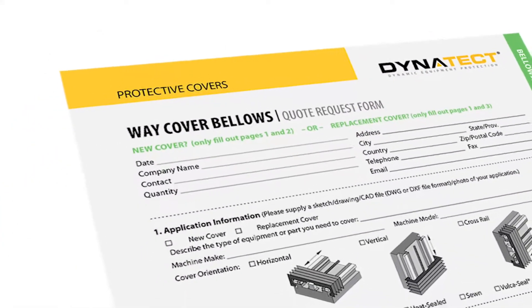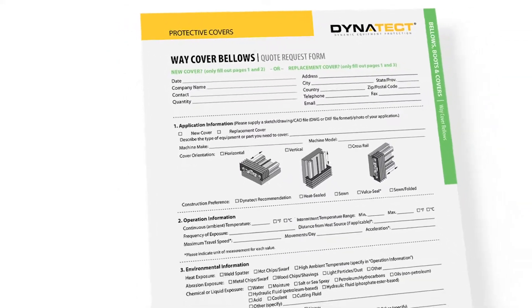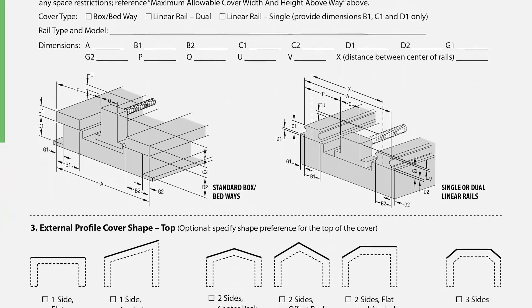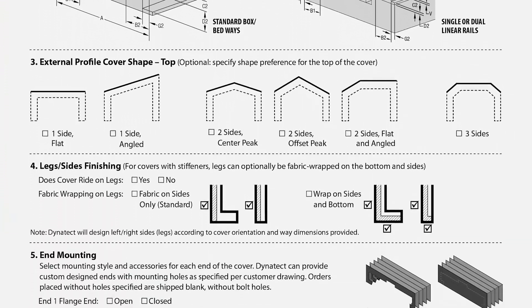Dynatech's forms provide a structured approach to getting a bellows quote. Pages 1 and 2 address bellows for machines that do not have a cover yet need one.